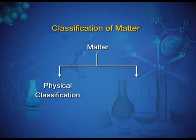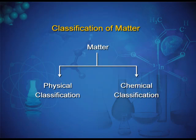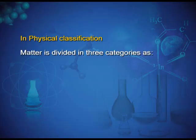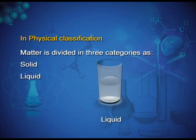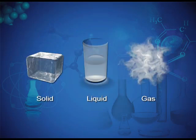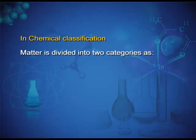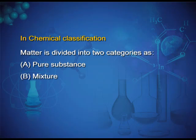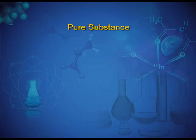Classification of matter: matter can be classified into two categories. First is physical classification and second is chemical classification. In physical classification, matter is divided into three categories: solid, liquid, and gas. In chemical classification, matter is divided into two categories: pure substance and mixture.